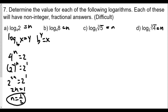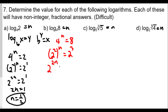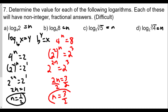For 7b, again we do the same thing. We rewrite this as an exponential equation: the base is four, the exponent is n, and our answer is eight. We want to rewrite both sides with the same base — not four, because writing eight as base four is difficult, but if we write them as base two: four to the n is the same as two squared to the n. Eight is two to the third, which gives us two to the 2n equals two to the third, or 2n equals three. Dividing both sides by two, n equals three over two.